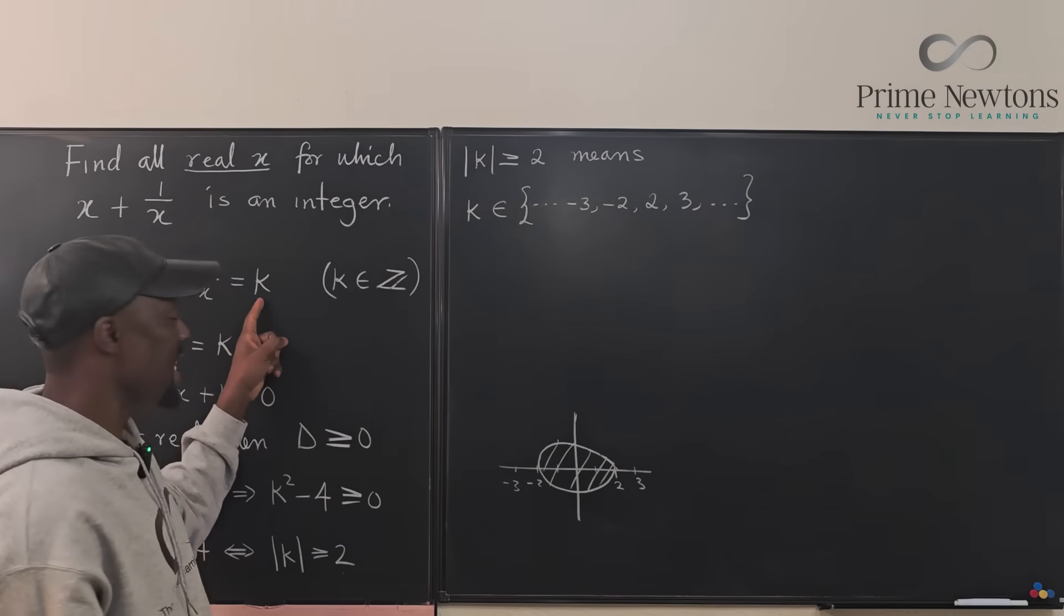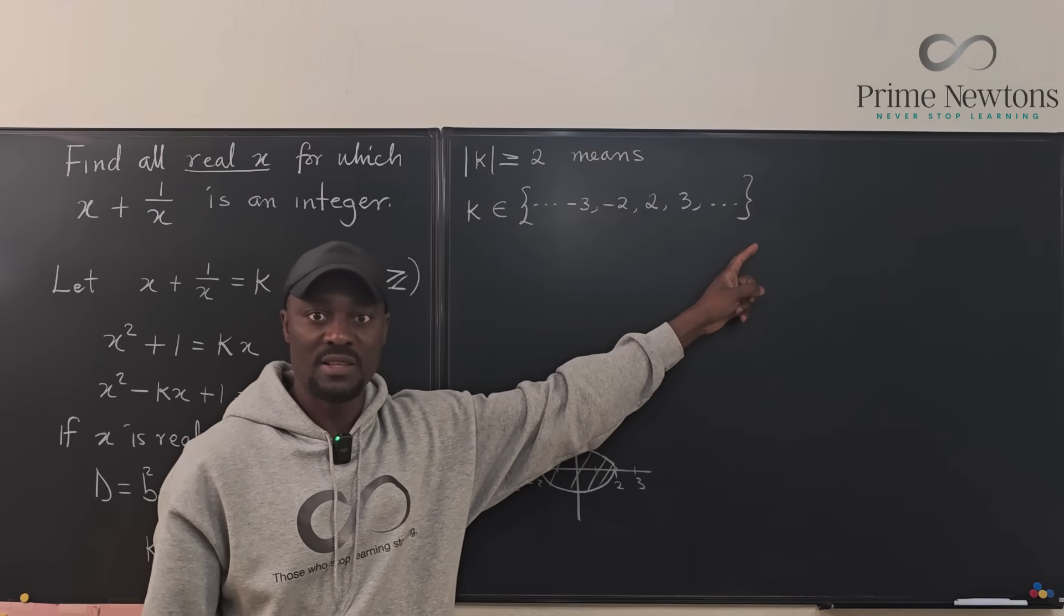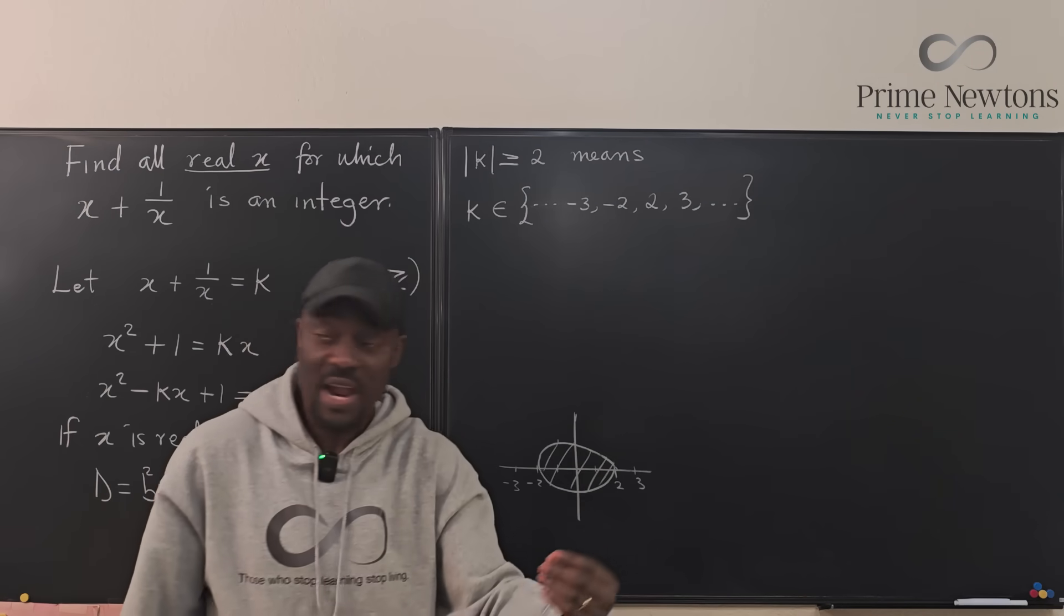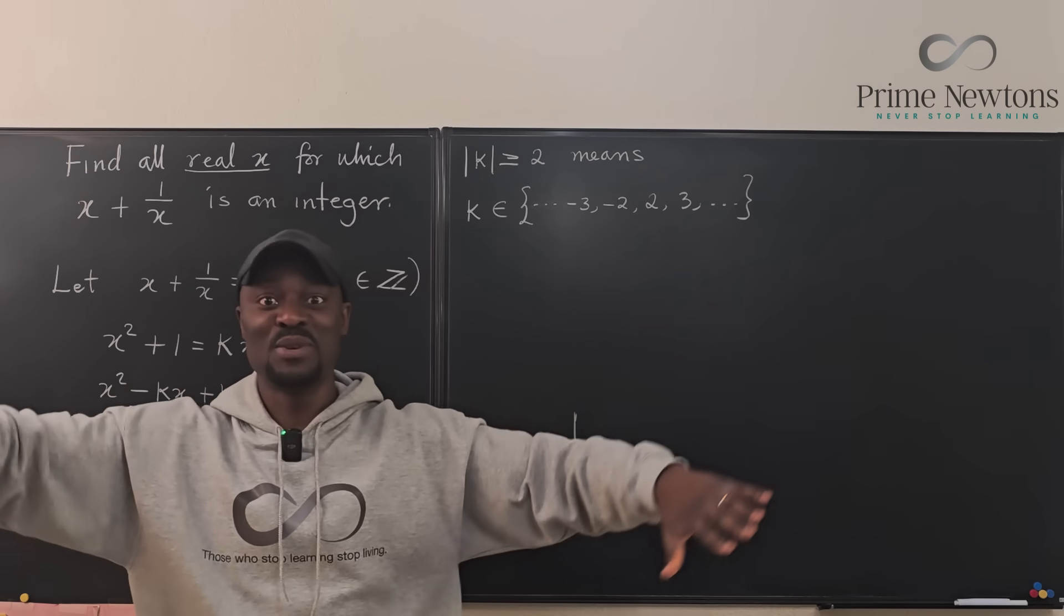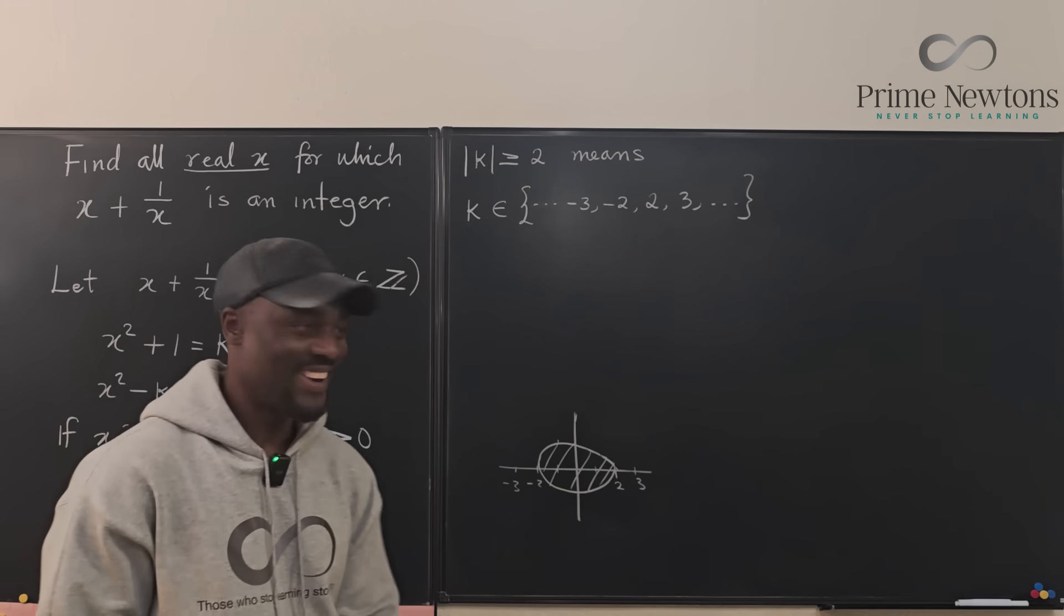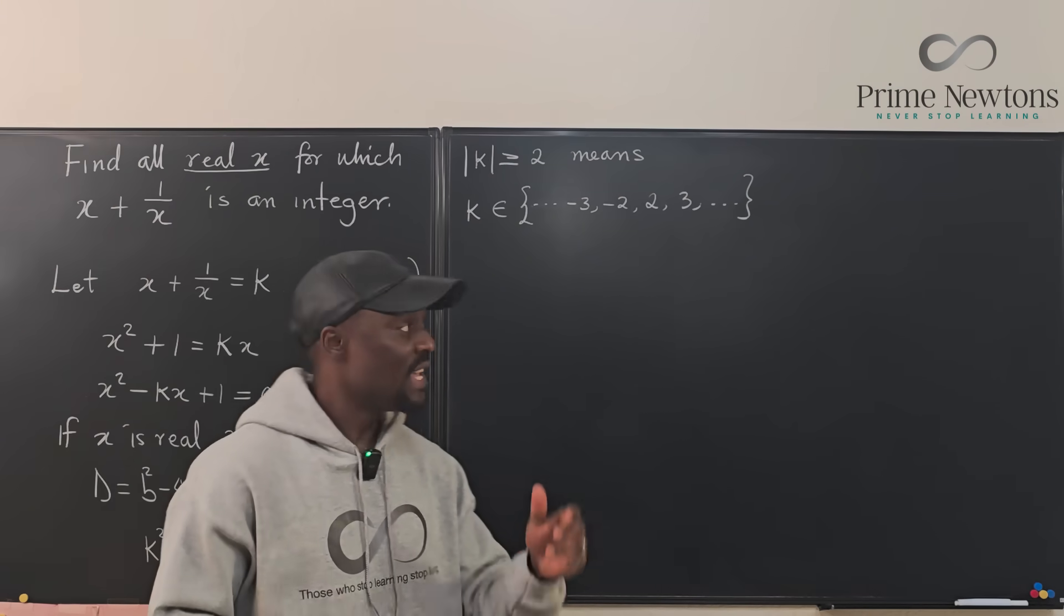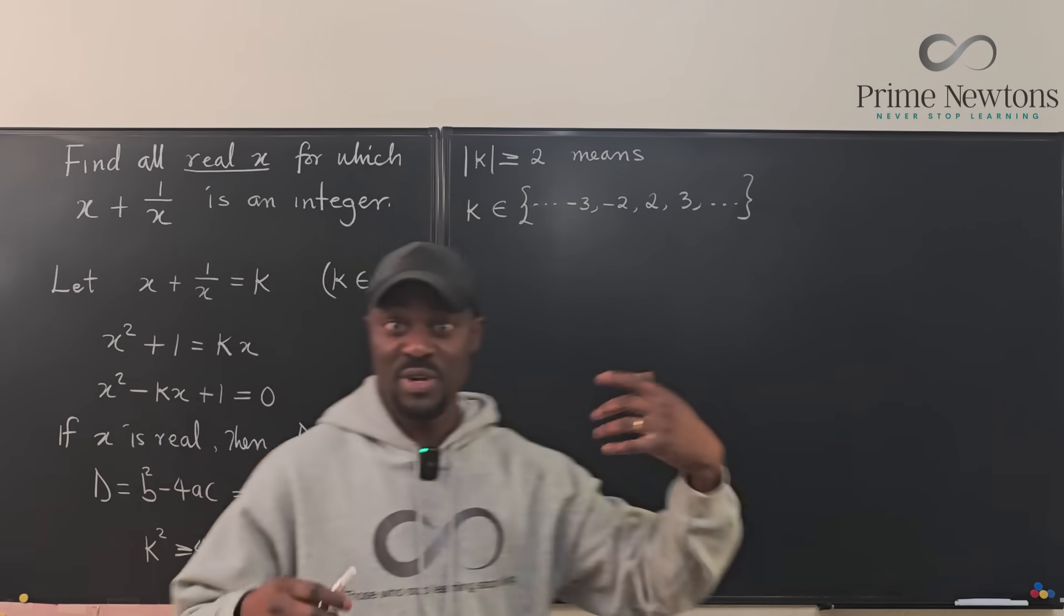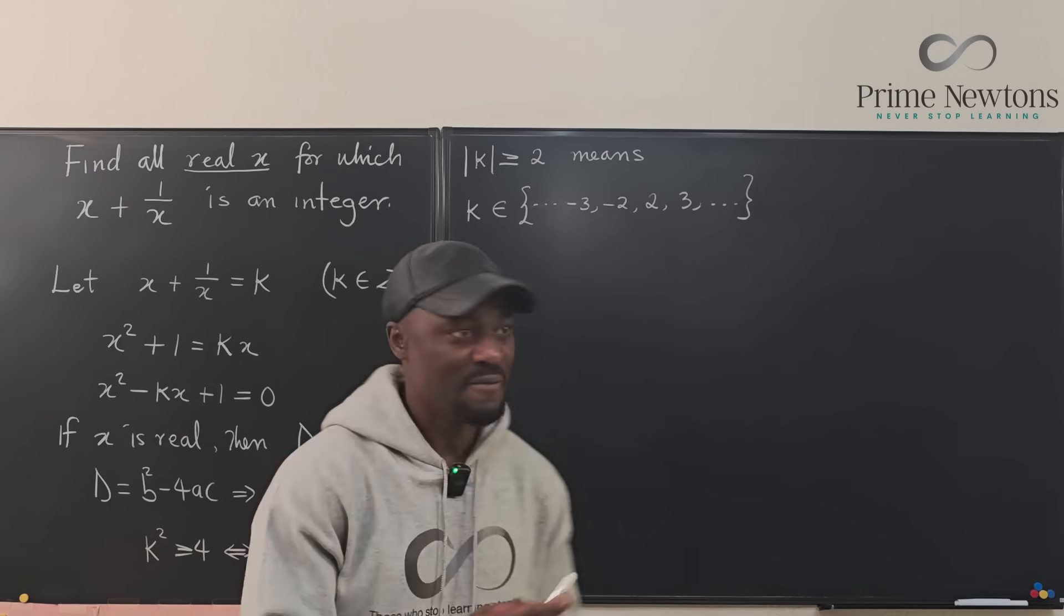So if you want to use any k for this expression, you must use numbers that are in this set. That's the only way this can be an integer. And with this, life is beautiful. So now that we have a restriction for k, we can now find what the real values of x are by solving this quadratic equation, which is easy.